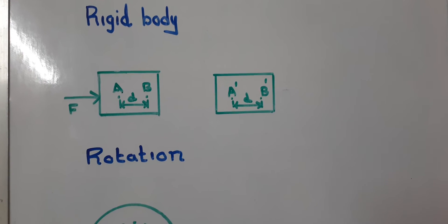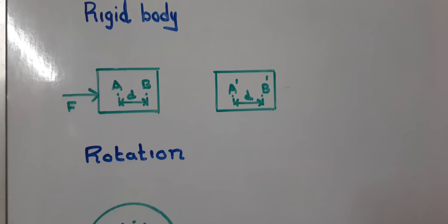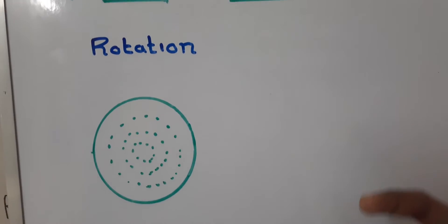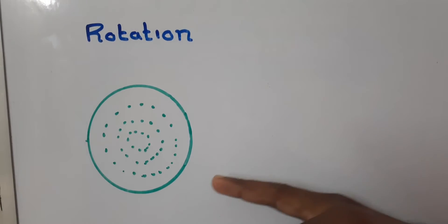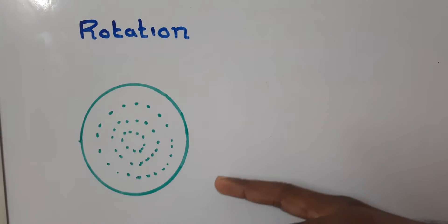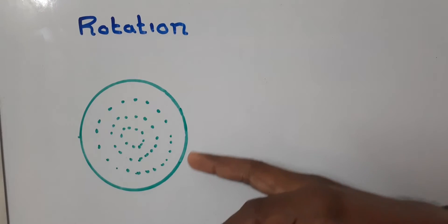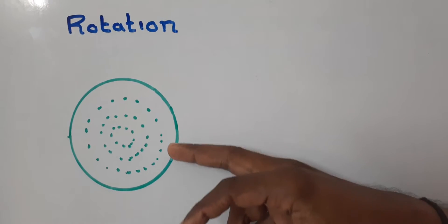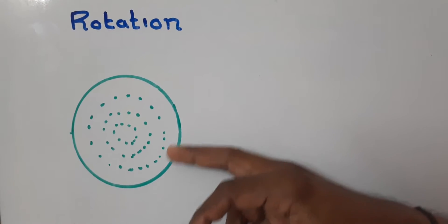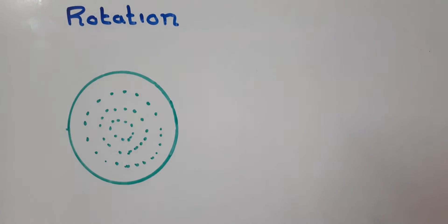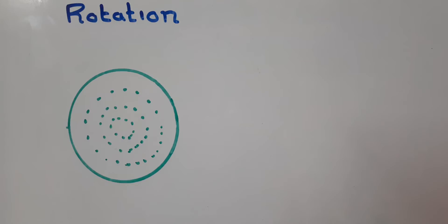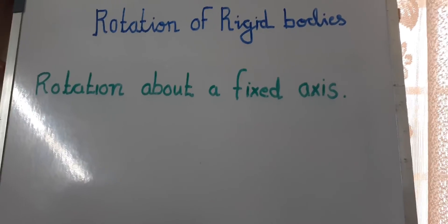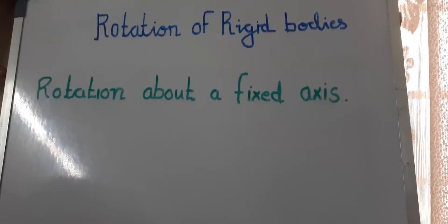Now we will see what rotation means. Rotation is a kind of motion in which all the particles inside the rigid body move in concentric circular paths. Now we will see rotation about a fixed axis.